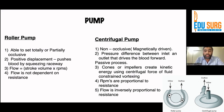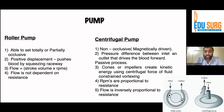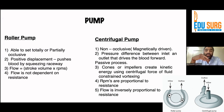Coming to centrifugal pumps — these are non-occlusive pumps which operate on the principle of blood entering the pump by the vortexing action of spinning impeller blades or rotating cones. Impeller cones are magnetically coupled with an electrical motor, and when rotated rapidly, generate a pressure differential which causes the blood to move ahead. Centrifugal pumps are dependent on RPM, preload, and afterload. If there is an increase in afterload, there will be a decrease in flow; decrease in afterload leads to increase in flow. Similarly, increase in preload leads to increase in flow and decrease in preload leads to decrease in flow. There are less chances of cavitation in centrifugal pumps.